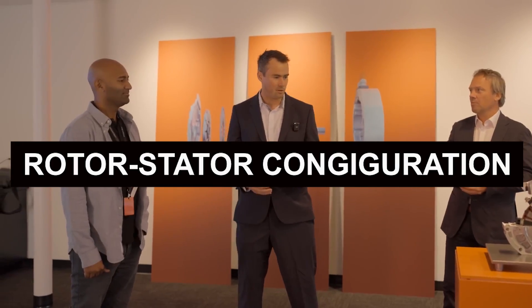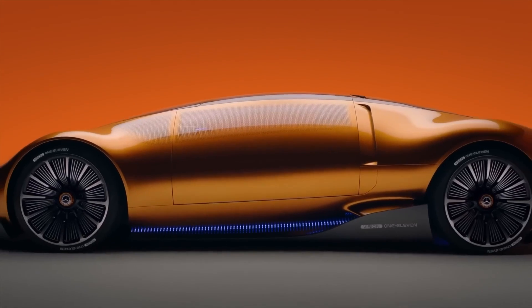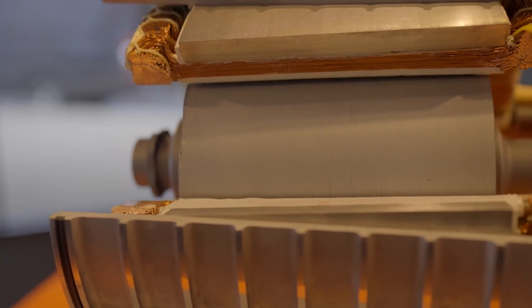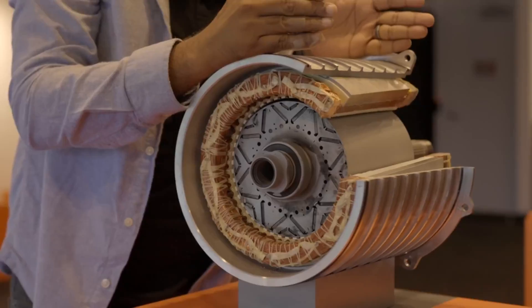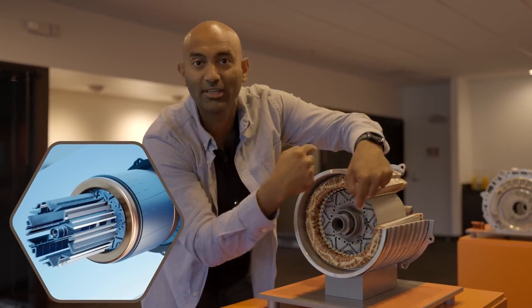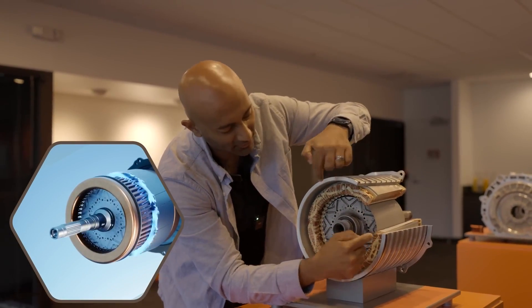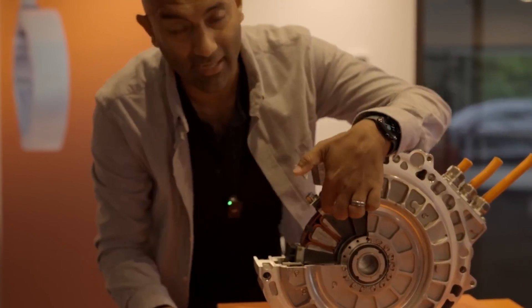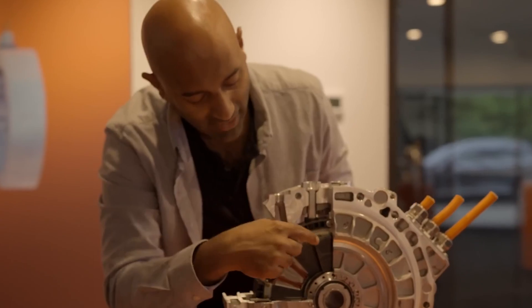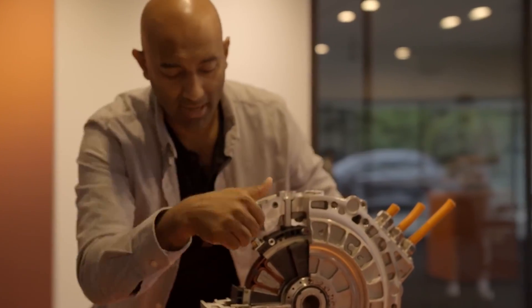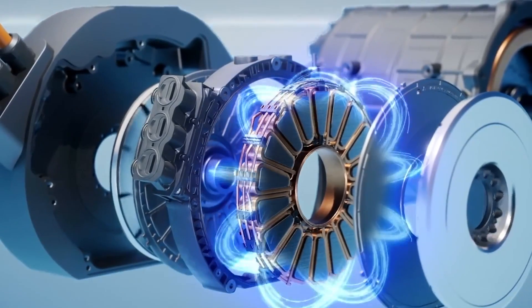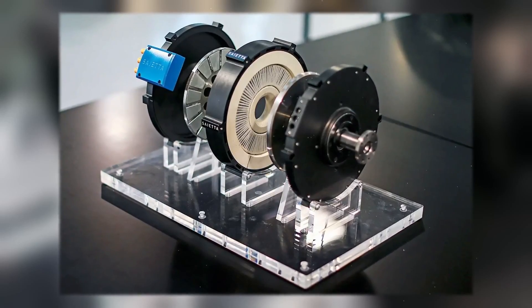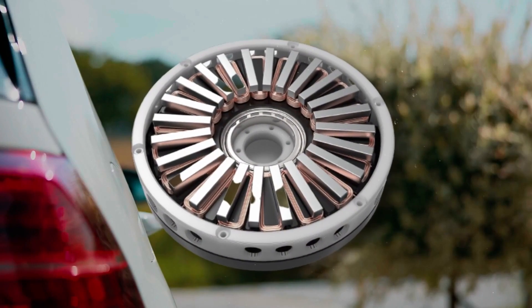Rotor-stator configuration. Radial motor: The rotor of a radial motor typically consists of permanent magnets arranged radially on the outer edge, and the stator is in the center. As the rotor spins, it generates torque. Axial flux motor: In an axial flux motor, the rotor is a thin, flat disc with magnets on its surfaces, and the stator consists of coils arranged around the rotor. This flat configuration is often referred to as a pancake design.